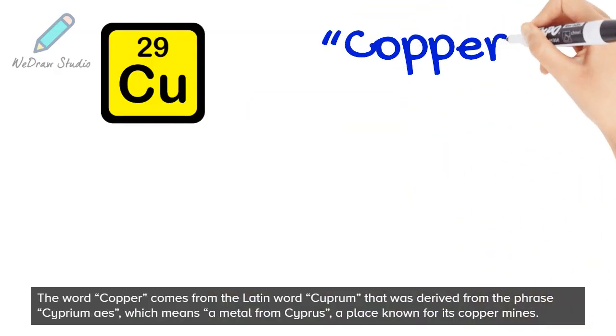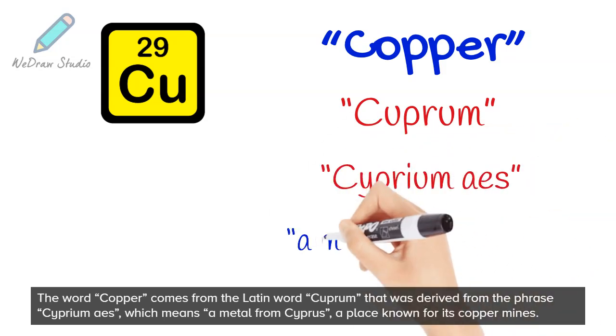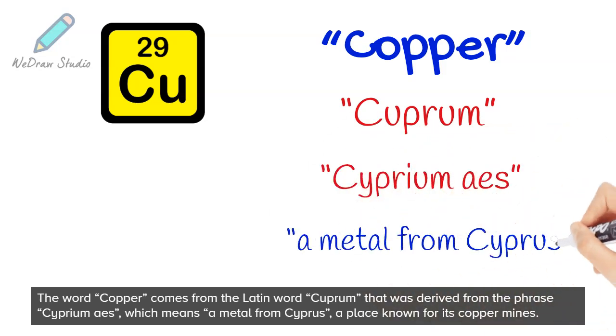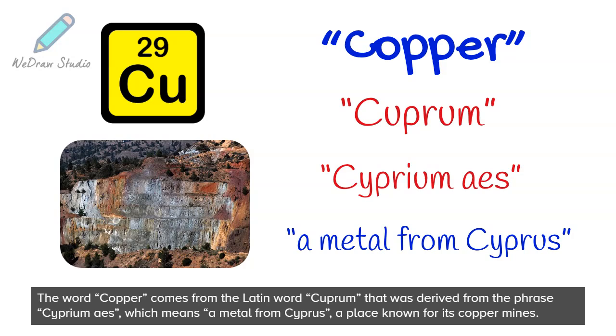The word copper comes from the Latin word cuprum, derived from the phrase Cyprium aes, which means a metal from Cyprus, a place known for its copper mines.